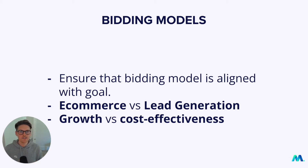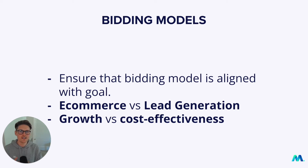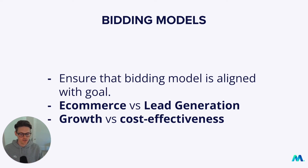There are two ways of looking at bidding models that you need to know. Is your business e-commerce or is it lead generation? The next thing is the bidding model needs to be aligned with your goals — is your goal growth or cost effectiveness? This is very different for a lot of brands. Everyone says they want growth, but if you grow a brand too much or the cost per lead or cost per sale goes too high, they freak out and realise it's about cost effectiveness as well.